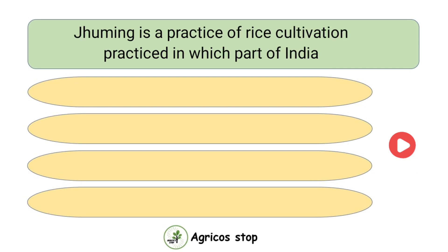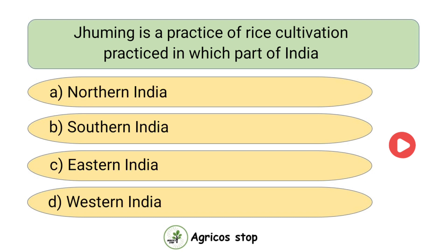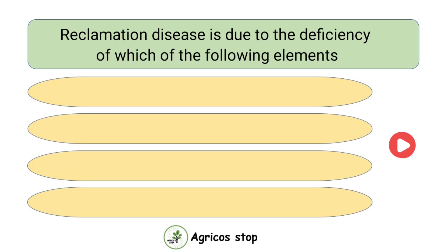Zooming is a practice of rice cultivation practiced in which part of India? Options are Northern India, Southern India, Eastern India, and Western India. The answer is Eastern India. Zooming is a practice of rice cultivation practiced in Eastern India.